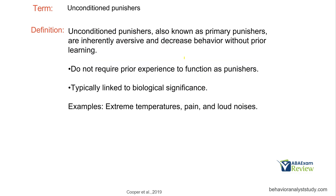Starting with unconditioned punishers, also known as primary punishers, they're inherently aversive and decrease behavior without prior learning. Punishers will typically be aversive, but consequences are all about how they influence behavior, not necessarily topography. You can think of unconditioned punishers as aversive because no prior experience is needed for them to function as punishment. They're typically linked to some sort of biological significance — same as unconditioned reinforcement. When we think of things like food, shelter, or water, we need these things biologically; innately we're going to seek those out.